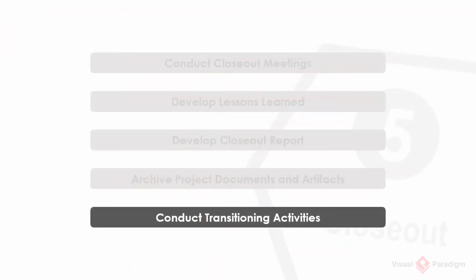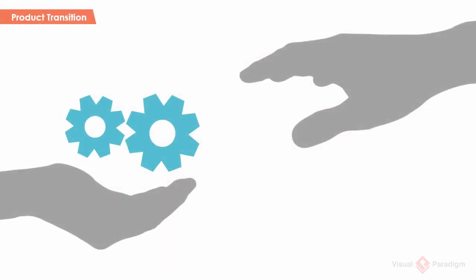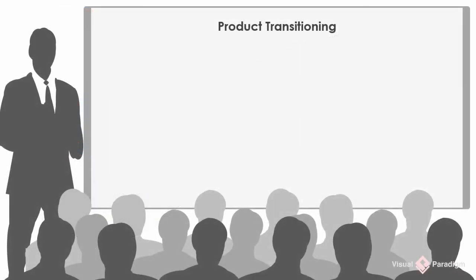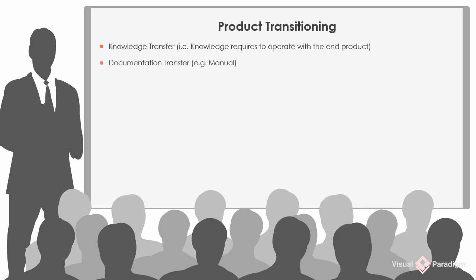Conduct transitioning activities. The project is near its end. You have to transfer the physical product and any other knowledge required to operate it to the operation staff who will use and maintain the product as an ongoing activity. The transitioning involves: knowledge transfer — the knowledge required to operate the end product, including understanding how the product integrates with business workflow, how features work, any login credentials required, assumptions made, and who can be contacted for help. A user training session is a good method for knowledge transfer. Documentation transfer — the written material giving instructions or information regarding product use. Physical transfer — physically turning over control of the product to the operational unit responsible for supporting it.